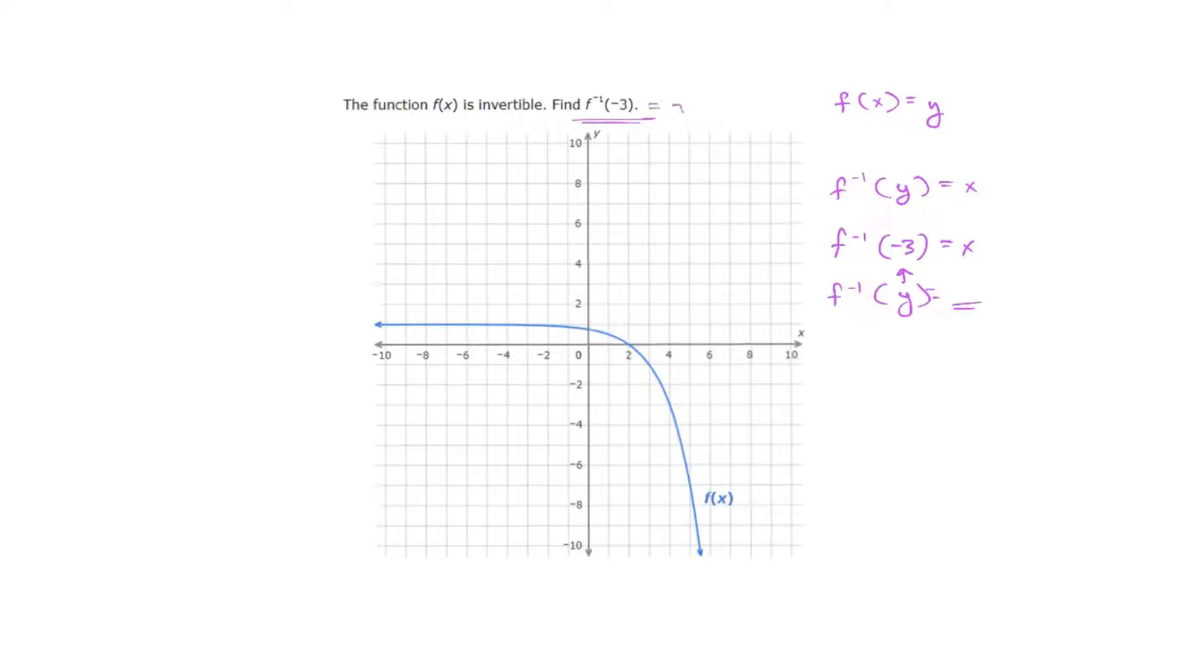So essentially this question is looking for the X. What I like to do is set up my coordinate when I'm looking at my inverse and say, okay, actually my Y was -3 and they're asking me for my X. So what I'll do is look for where Y is -3 here and recognize that this is my X, which in this case would be 4.